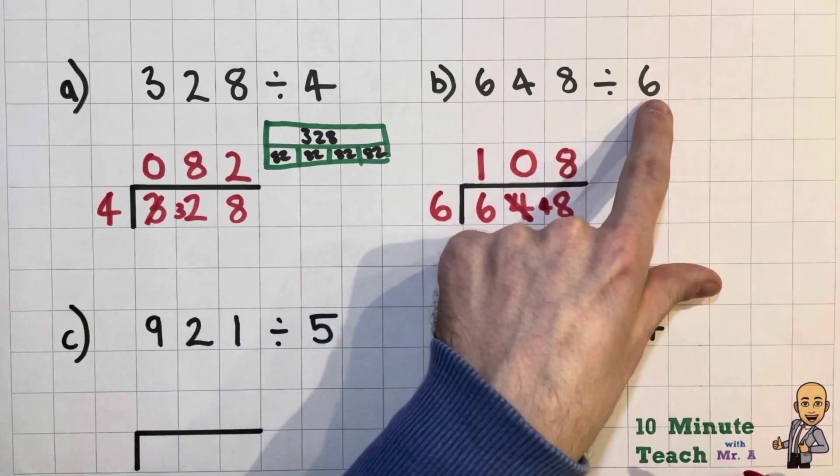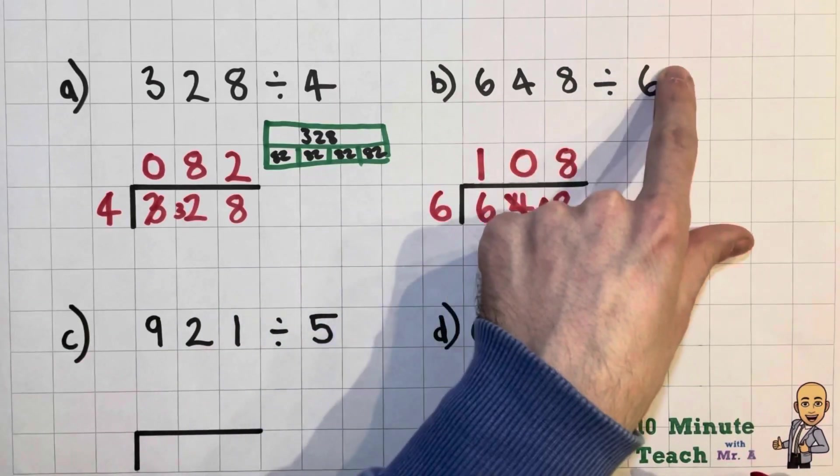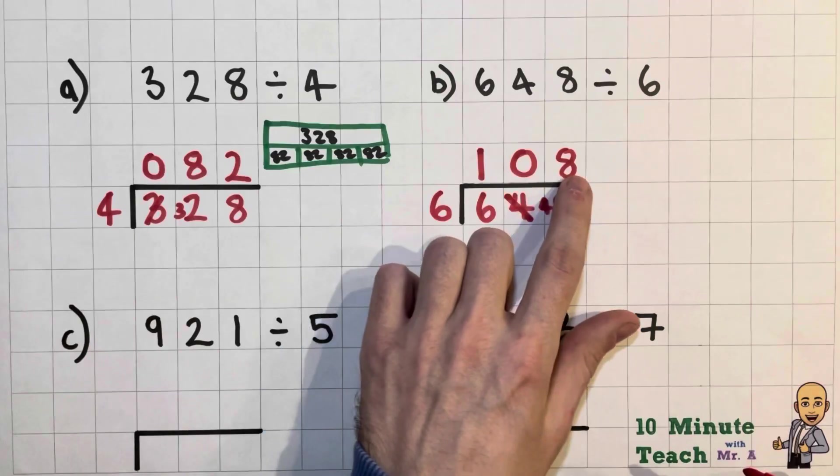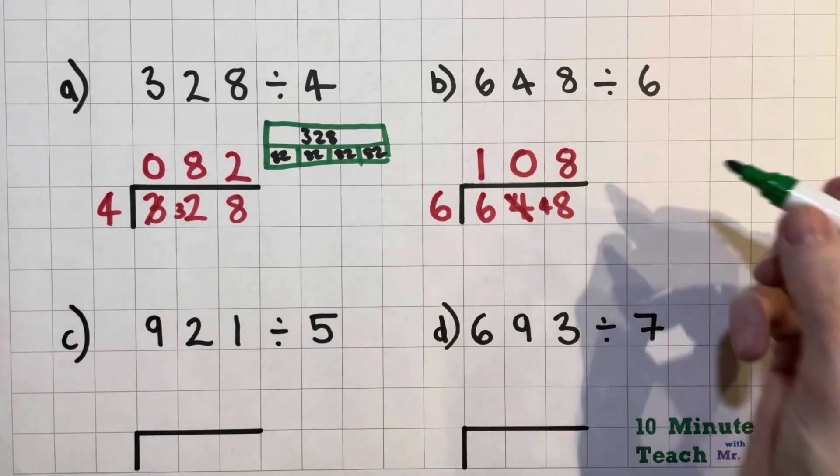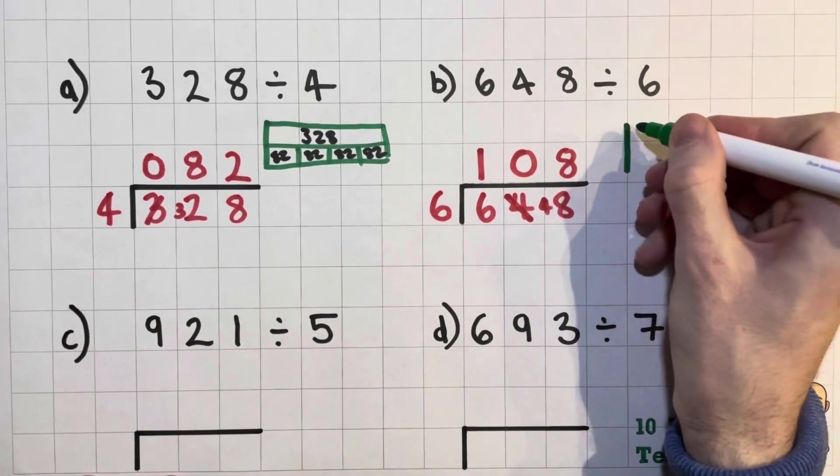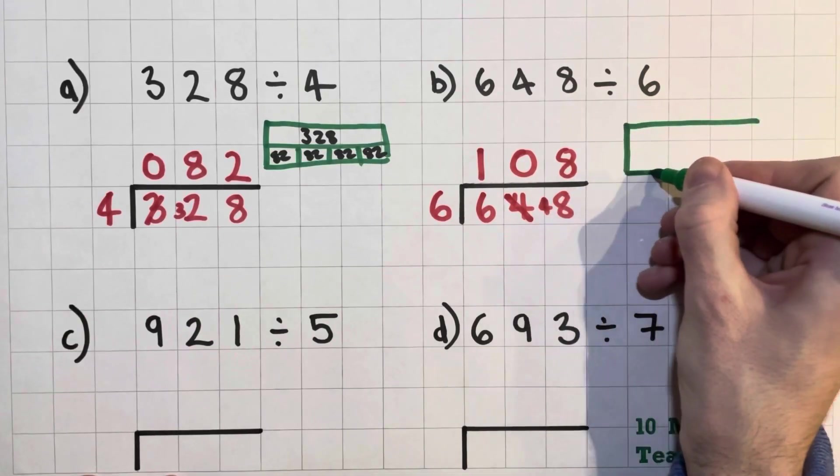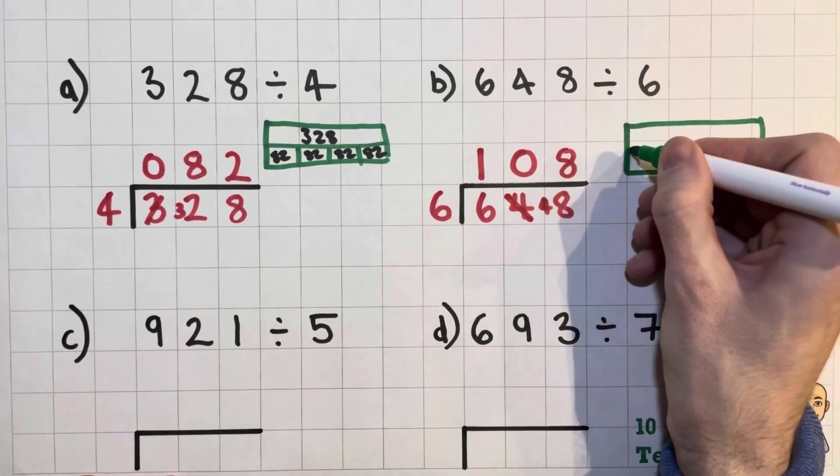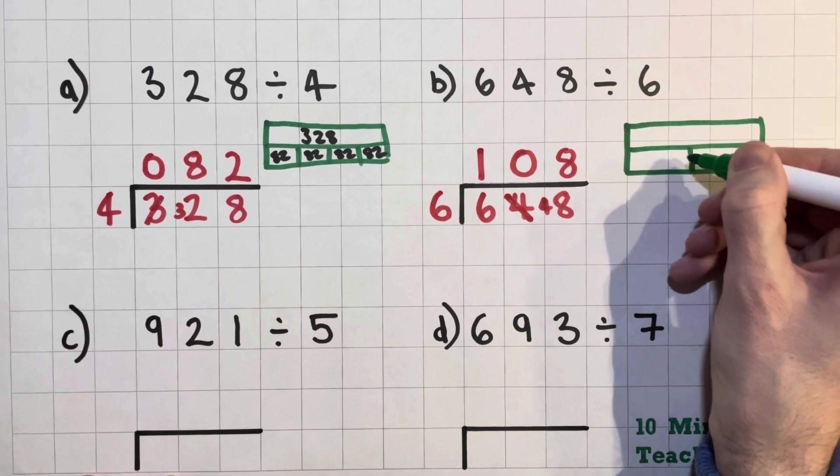So 108. So the answer to 648 divided by 6, or 648 split into six equal pieces gives us 108, and this is what it would look like in the bar model as well. So let's have a little go, so let's have a little go at drawing this one. So smaller pieces this time.